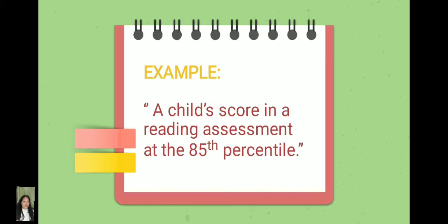I will give you another example of norm referenced interpretation using percentile rank. By saying that a child's score in a reading assessment is at the 85th percentile, it means that the child scored better than 85% of the students who took the same assessment.